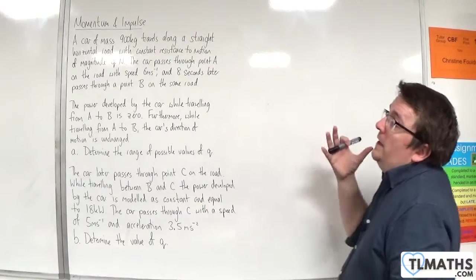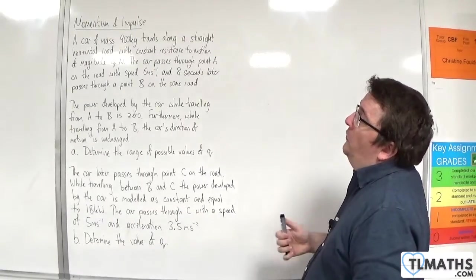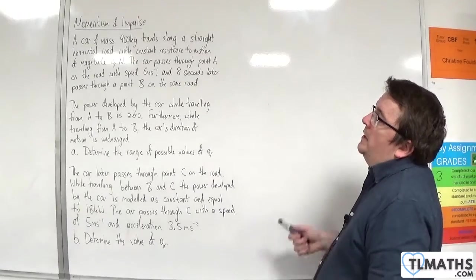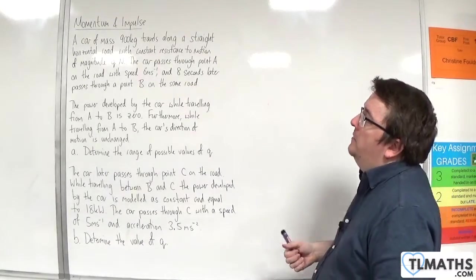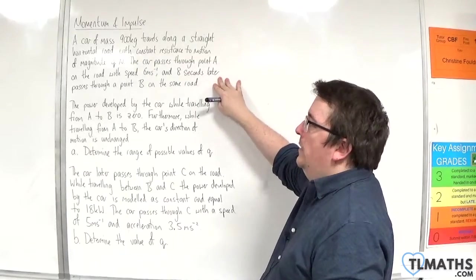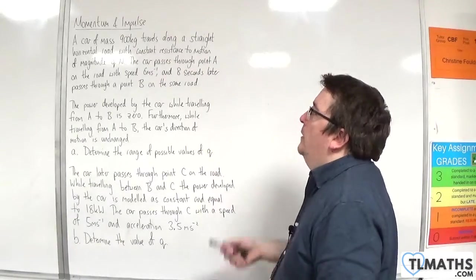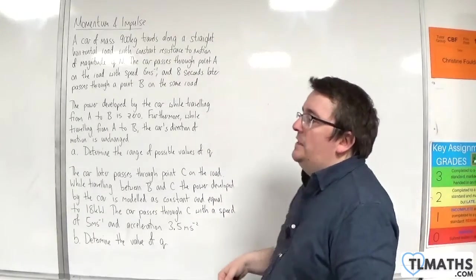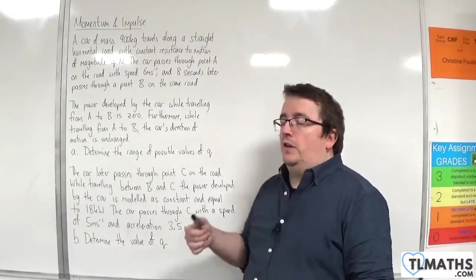In this problem, we have a car of mass 900 kilos travelling along a straight horizontal road with constant resistance to motion of magnitude Q newtons. The car passes through point A on the road with speed 6 metres per second, and 8 seconds later passes through point B on the same road. The power developed by the car while travelling from A to B is zero. Furthermore, while travelling from A to B, the car's direction of motion is unchanged. Determine the range of possible values of Q.